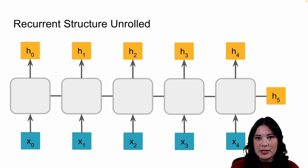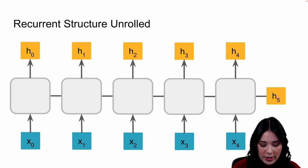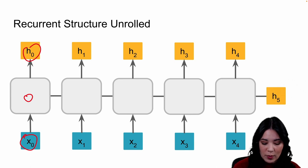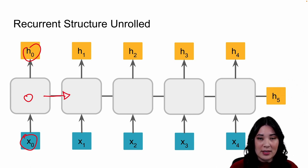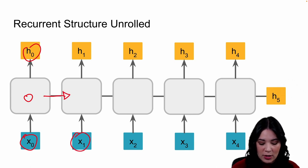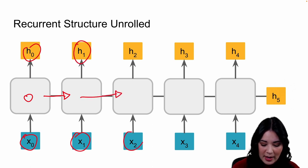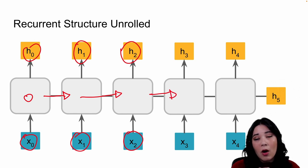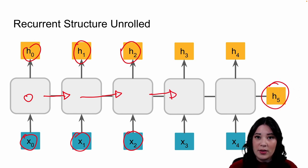With a simple recurrent architecture, we take in inputs and do some math to produce a hidden state. That hidden state is both an output and an input at the next time step. We then take in a new input, create a new hidden state, feed that to the next time step, and carry this all the way through the end of the sequence where we finally get our output value.